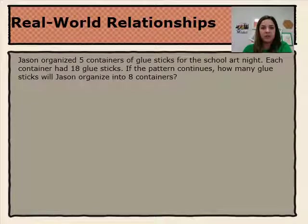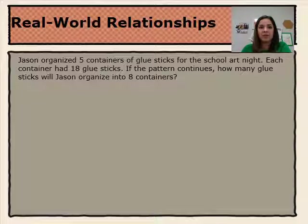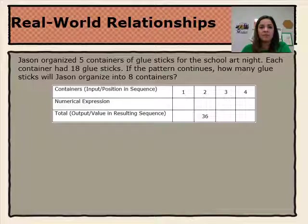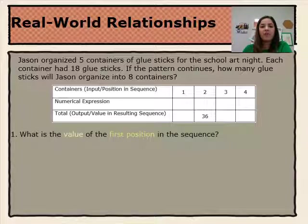We're going to look at some real-world relationships. Jason organized 5 containers of glue sticks for the school art night. Each container had 18 glue sticks. If the pattern continues, how many glue sticks will Jason organize into 8 containers? Create an input-output table to represent this information. Here's the table: we have the containers as the input — the position and sequence — the numerical expression, and the total as the output — the value in the resulting sequence. Our first question is: what is the value of the first position in the sequence?